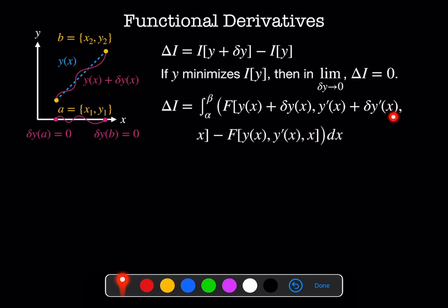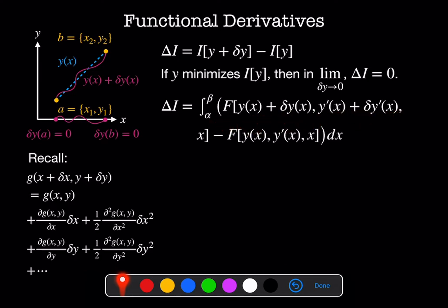Let's recall how we might expand out this term here. Imagine I've got some function g of x plus delta x and y plus delta y, and I'd like to expand these for small delta x and delta y. Basically we're doing a Taylor series expansion, but now we've got two variables. So the first term is going to be g of x plus y. Then we've got a term that's linear in delta x with the coefficient dg by dx, then the next order term is 1 half d squared g by dx squared delta x squared. We can expand these in terms of y as well. We could include higher order terms, but this is going to be sufficient for our purposes here.